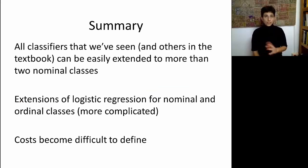So to summarize, all the classifiers that we've seen thus far, as well as others that are listed in the textbook, can easily extend to more than two nominal classes, meaning classes that are just different from each other. Logistic regression does have extensions for nominal and ordinal classes, but that is more complicated, and not every software will support that. Lastly, misclassification costs are more complicated and sometimes impossible to elicit or define. Therefore, think carefully whether you really need more than two categories.